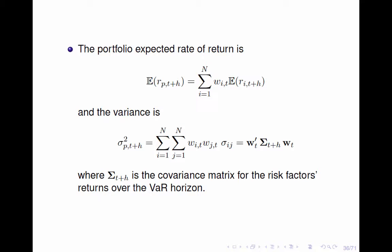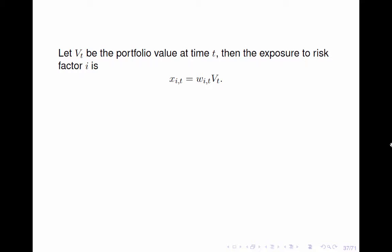Let capital sigma t plus h denote the covariance matrix of the risk factors rate of returns over the time horizon h. The variance of the portfolio can be expressed in the equivalent matrix multiplication form.